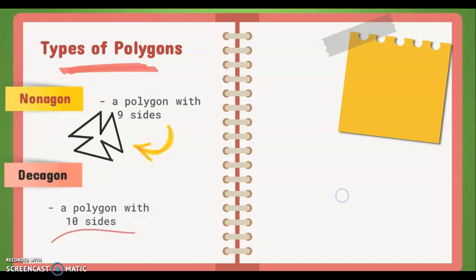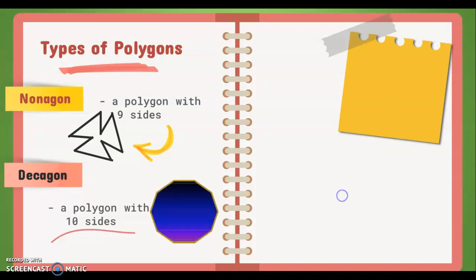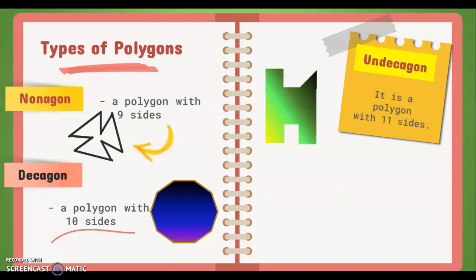A decagon is a polygon with ten sides. An undecagon is a polygon with eleven sides. And a dodecagon is a polygon with twelve sides.